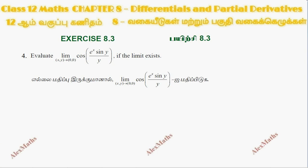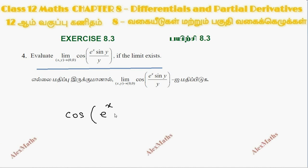Hi students, this is Alex here. Exercise 813, question number 4: evaluate the limit as (x, y) tends to (0, 0) of cos(e^x) times sin(y) divided by y, if the limit exists. So this is cos of e^x into sin(y) divided by y.